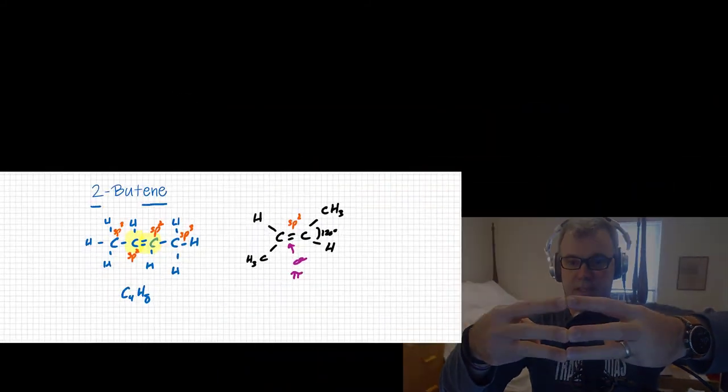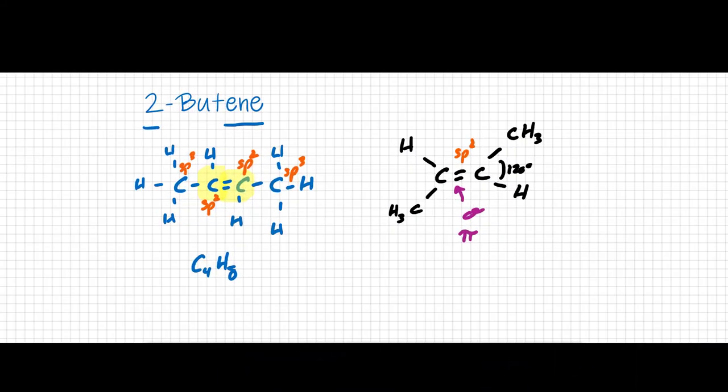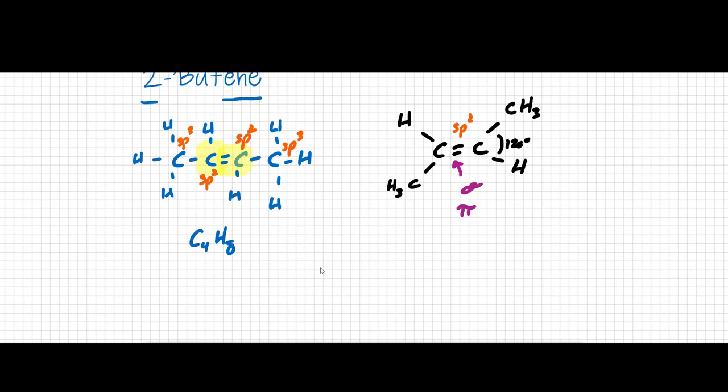The result is that this shape is kind of locked. And this means there are actually two forms of two butene. This form that we've just drawn is the trans form of two butene, where these CH3 groups are opposite of each other.